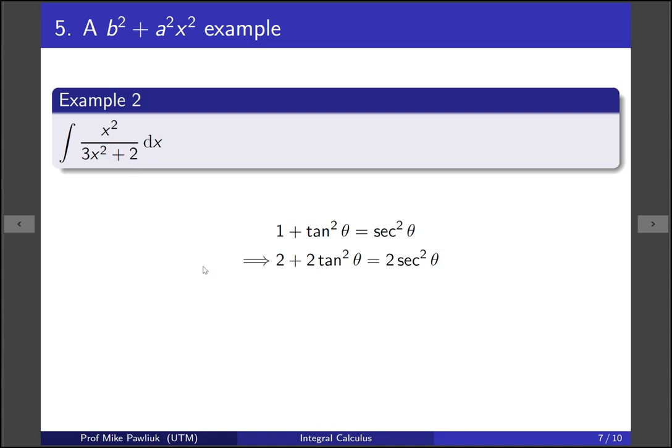We fix the constant, so to get this 2 to show up we multiply everything by 2. Now we need to figure out what x should be, so we set what we want with what we have. And that will tell us that 3x squared should be equal to 2 tan squared. Solving for x gives us the root 2 over 3 tan theta.